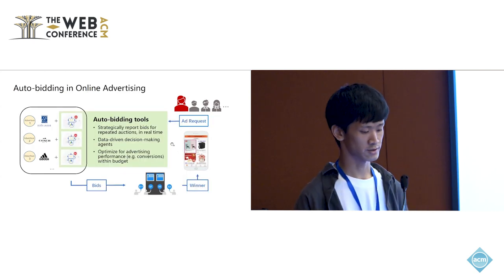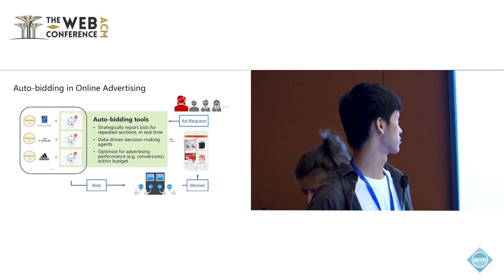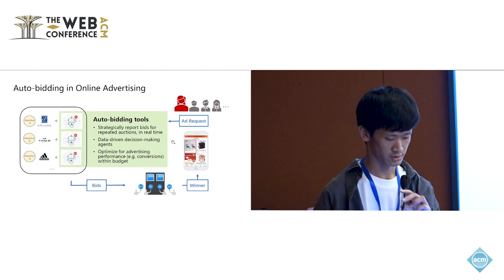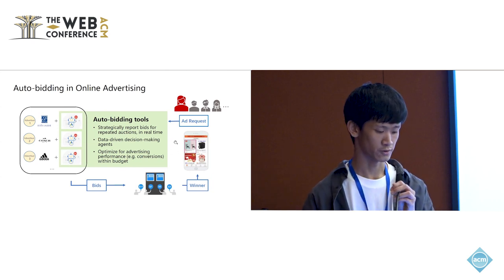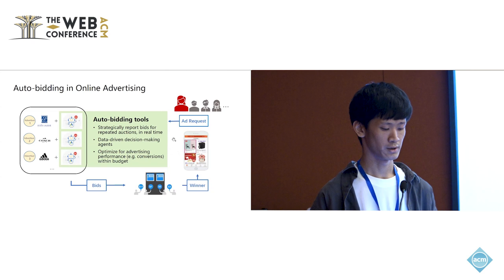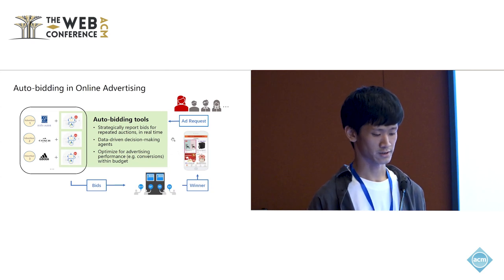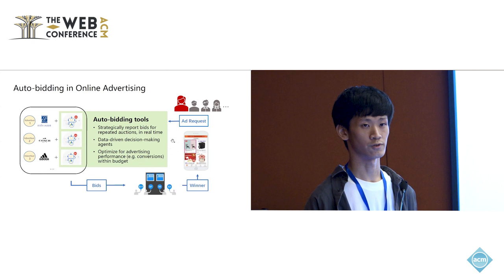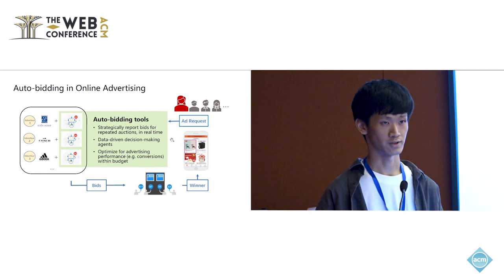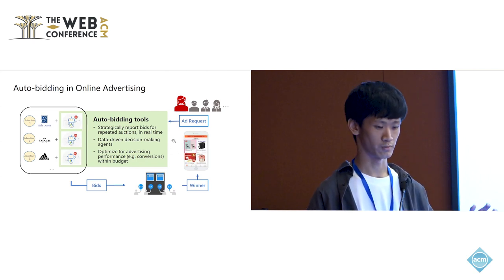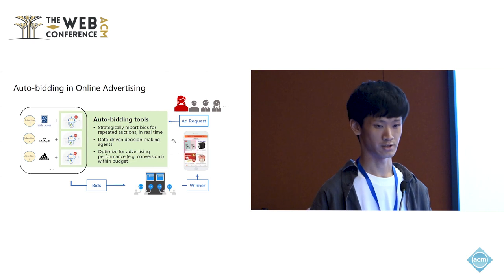Advertisers usually utilize auto-bidding tools to strategically report bids for repeated auctions in real-time. These auto-bidding tools are actually data-driven decision-making agents and their goal is to optimize for advertising performance of the advertisers. For example, the total conversions for one day within the daily budget.